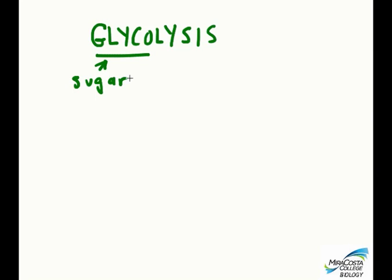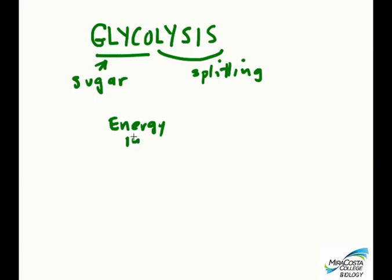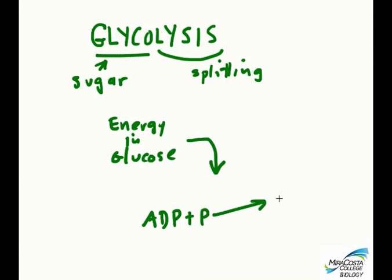Glycolysis means splitting of sugar, and this whole endeavor is directed at using the energy contained in glucose to produce the highly energetic ATP from ADP plus phosphate. We need more ATP—that's the whole point of this module—but in the very first step of glycolysis, we're going to use a molecule of ATP to change glucose into glucose phosphate, which is the first of ten steps in the glycolytic pathway.